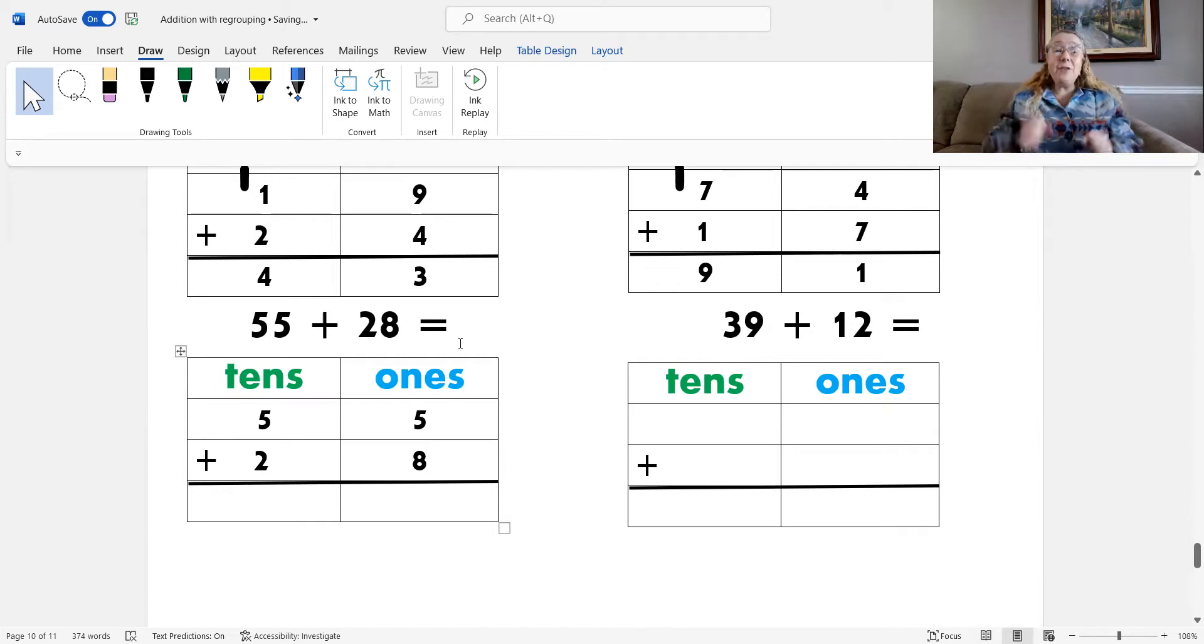Yes. Add the ones. 5 plus 8. Let's do that with counting up. 5, 6, 7, 8, 9, 10, 11, 12, 13. So, 5 plus 8 is 13. And I know that 13 is the same as 1 ten and 3 ones. So, I can put my 3 ones into the ones column. Do you remember what to do with the 1 ten? Yes. I place the 1 ten into the tens column.